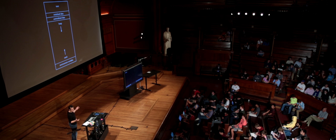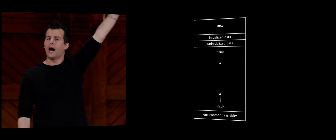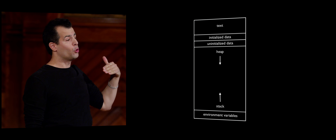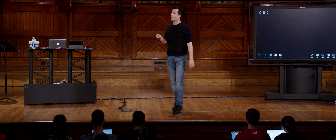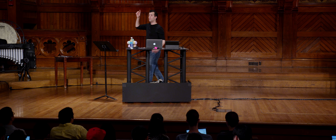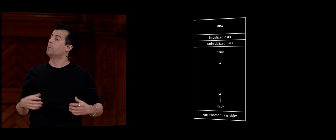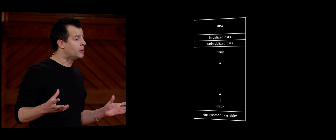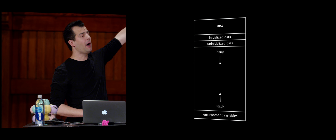That memory — probably a gigabyte or two or much more — is laid out for a given program in a rectangular conceptual model, with the stack at the bottom and other stuff at the top. The text segment at the very top is the zeros and ones composing your compiled program. Below that is initialized and uninitialized data — global variables, statically defined strings, hard-coded words like 'hello' that aren't taken from the user. At the bottom is the stack.